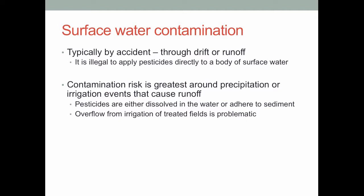When we talk about water contamination, much like other forms of contamination, we're generally talking about accidental introduction — typically some sort of drift event or runoff after spraying. It is illegal to apply pesticides directly to surface water, so when it shows up, it generally has to have gotten there accidentally. In the San Joaquin Valley, we see contamination mostly around precipitation and irrigation events that wash pesticides off fields into water sources — things like dormant sprays during winter with chance rain events, or overflow from irrigation in treated fields.